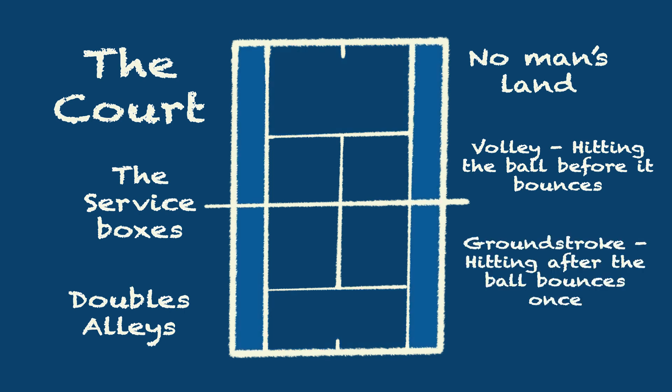The doubles alley is the two extra sections on the left and right of the court. This space is only used in doubles matches. In singles, that space is removed.